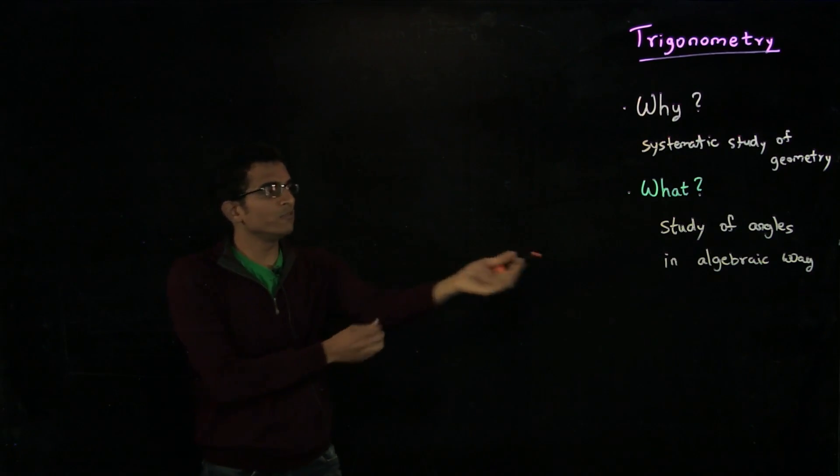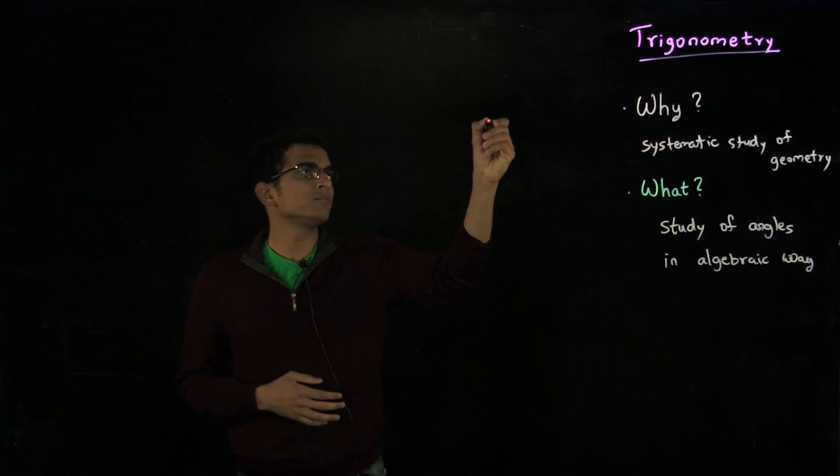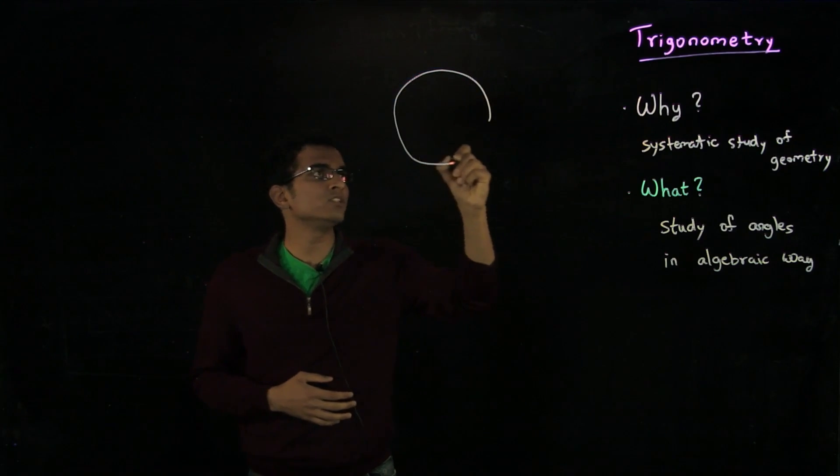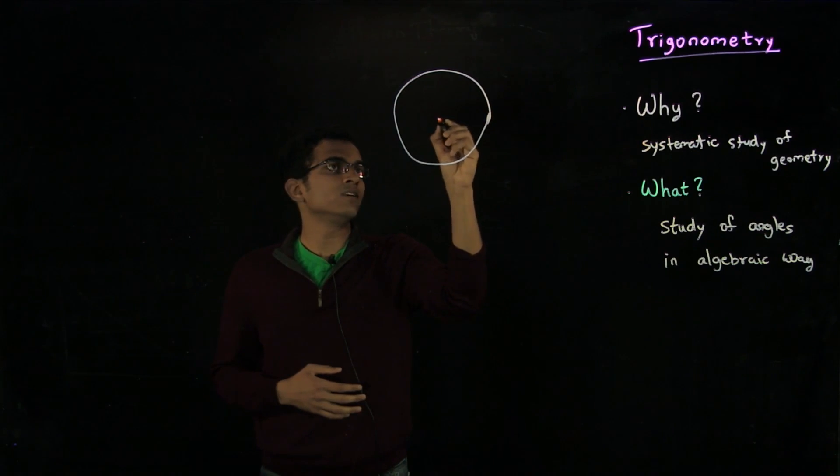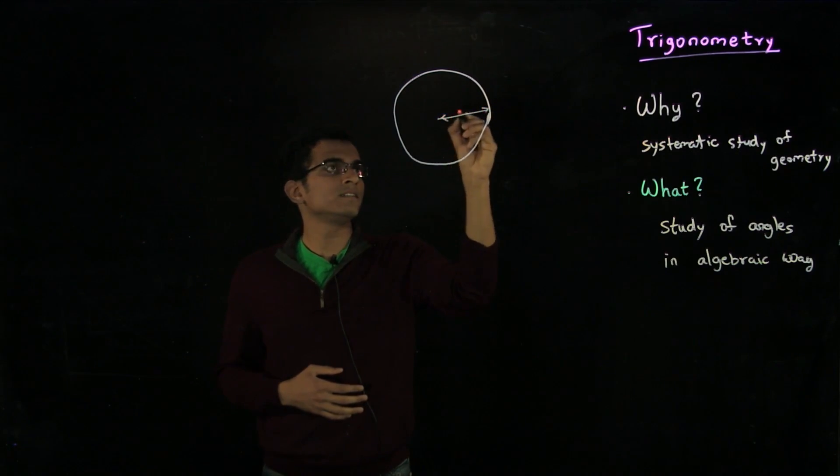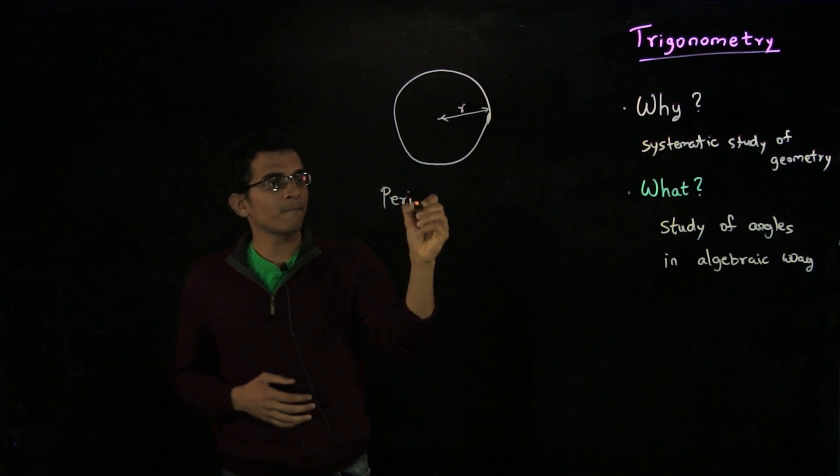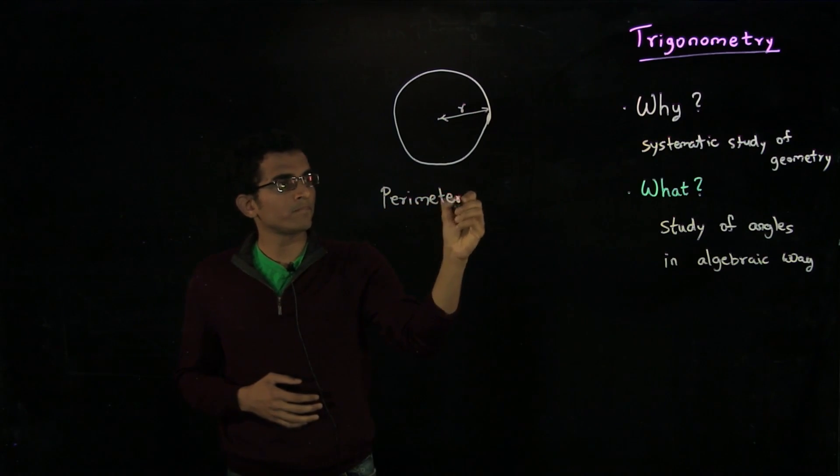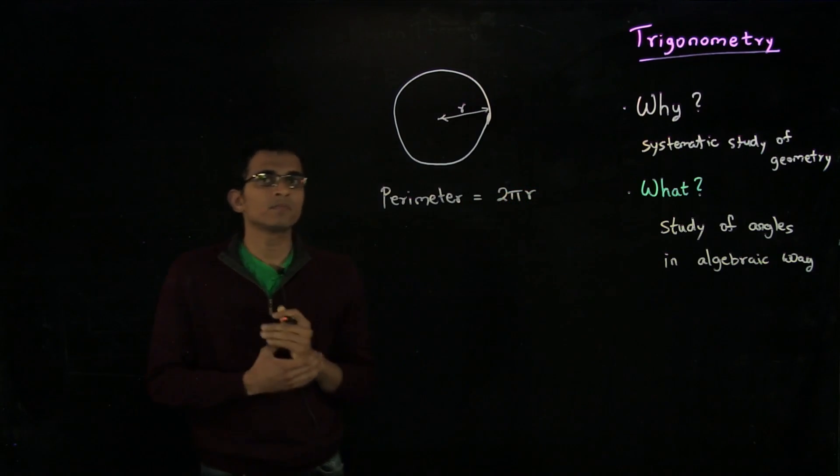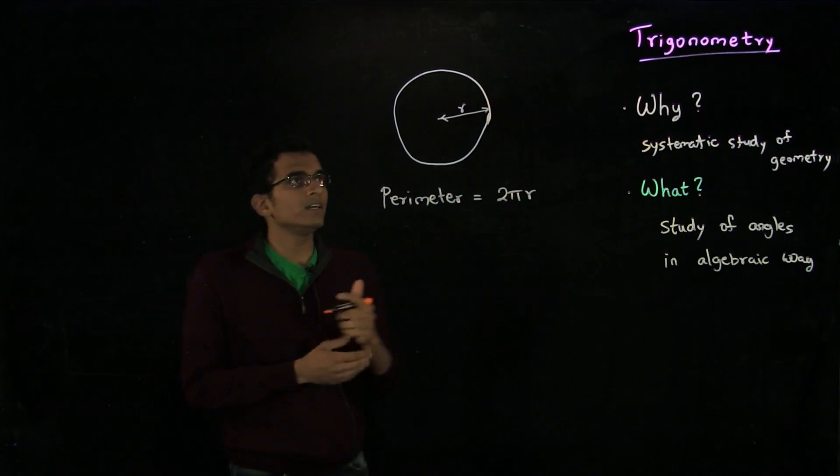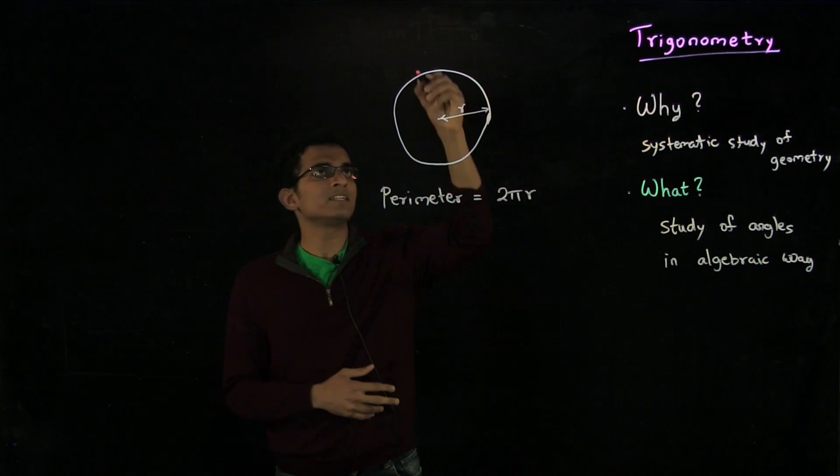Let us start with the very basics of what is an angle. You know from basically Euclidean geometry that if you have a circle of radius r, then the perimeter is equal to 2 pi r. We know this from basic geometry.